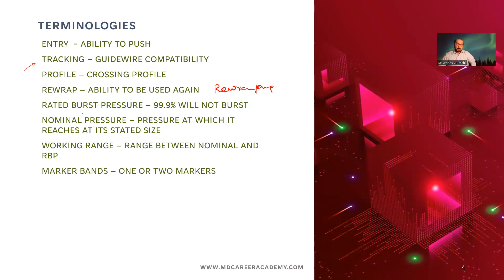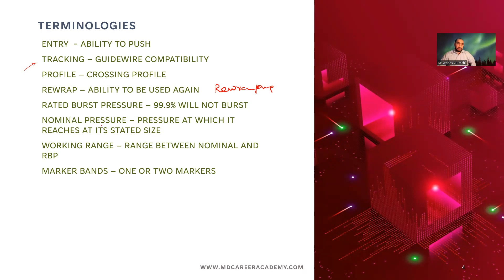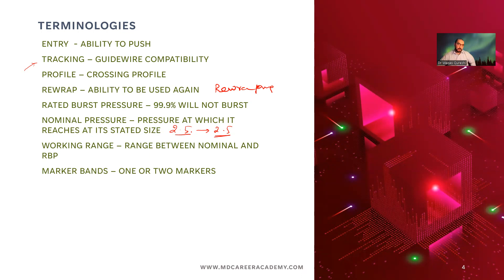'Rated burst pressure' means that 99.9 percent of balloons will not burst outside the body. Inside the body, the situation is different — the vessel may be pressing much more on the balloon. 'Nominal pressure' is the pressure at which the balloon reaches its stated size, so at nominal pressure of six, a 2.5 mm balloon should reach 2.5 mm — again, outside the body, not inside. The 'working range' is between nominal and rated burst pressure.